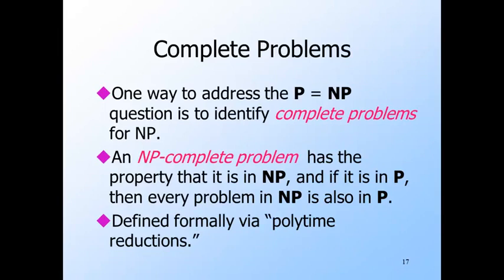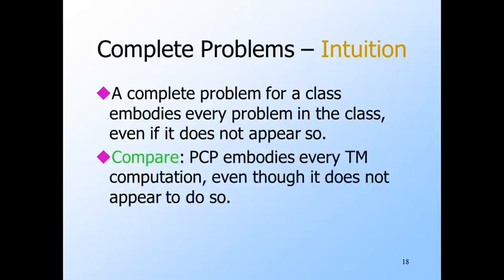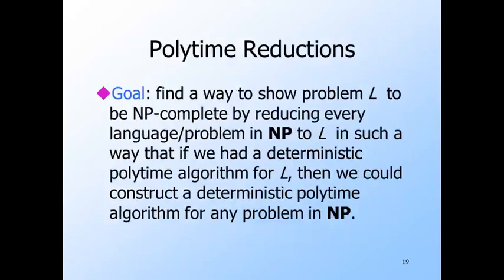There is only one well-known exception: graph isomorphism — given two graphs, is there a one-to-one matching of nodes making the graphs identical? This problem is in NP (guess the matching and check edges), but no polynomial algorithm is known and neither is there a proof that it is NP-complete. But graph isomorphism is an exception to the near-general rule: if it's in NP and not known to be in P, then it is NP-complete. To show problem L is NP-complete, we need a transformation from every problem in NP to L, fast enough that a polytime algorithm for L would yield polytime algorithms for all of NP.